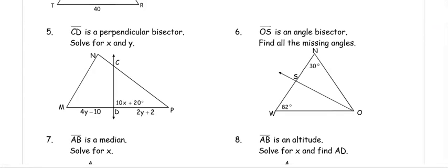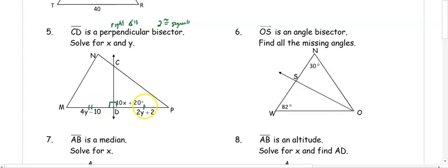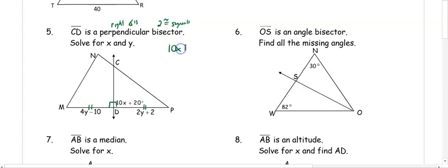In number five, we have a perpendicular bisector. A perpendicular bisector does two jobs: the perpendicular part creates right angles, and the bisector creates two congruent segments. By D, we have a right angle, so to solve for X: 10X plus 20 equals 90. Subtract 20 to get 10X equals 70, then divide by 10 to get X equals 7.